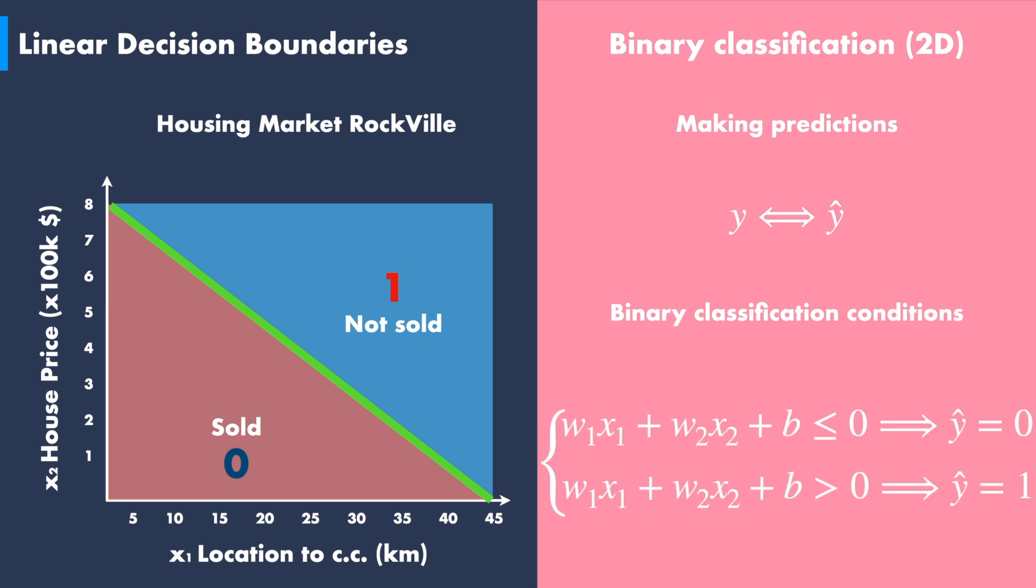The first condition states that w1x1 plus w2x2 plus b is smaller or equal to zero and corresponds to houses likely to be sold. This means the prediction y hat must have a value equal to zero.